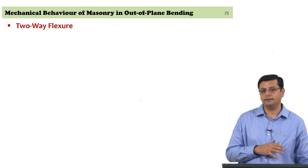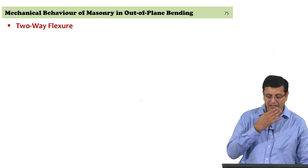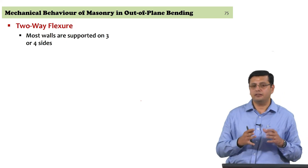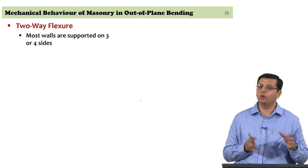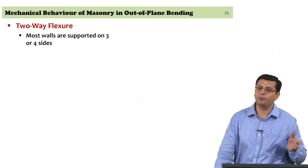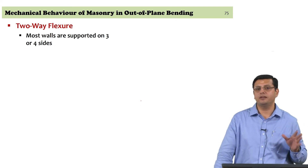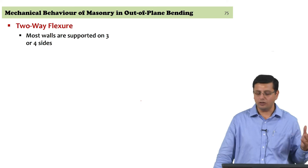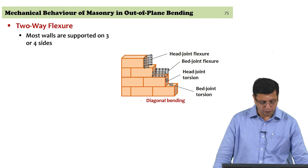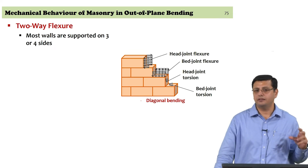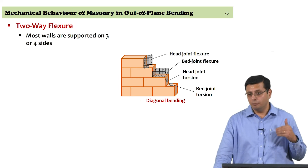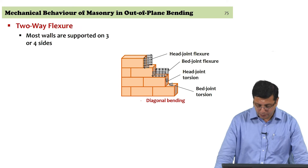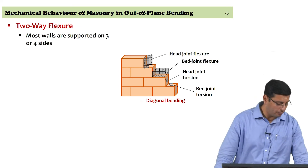That brings us to two-way flexure, which we have not yet examined. It is a complex mechanism — strictly speaking, this is what should be happening in most cases, since there are lateral restraints and top and bottom restraints. Most walls are restrained on three or four sides, so one-way flexure is an idealization. In a wall undergoing diagonal bending, the wall is subjected to bed joint torsion, head joint torsion, bed joint flexure, and head joint flexure — a combination of horizontal and vertical bending.